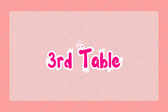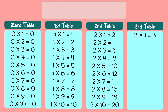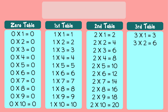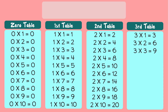Ok kids, now we will learn the third table. Three ones are three. Three twos are six. Three threes are nine. Three fours are twelve.